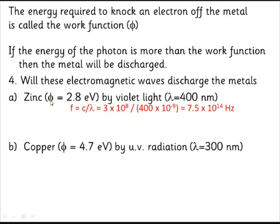So if I've got zinc, zinc's got a work function of 2.8 electron volts. I shine some violet light on it. It's got a wavelength of 400 nanometers. Are these photons going to have enough energy to knock off these electrons? Well, f equals c over lambda. Here's our frequency in hertz.